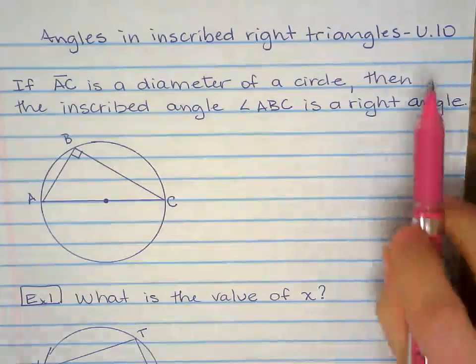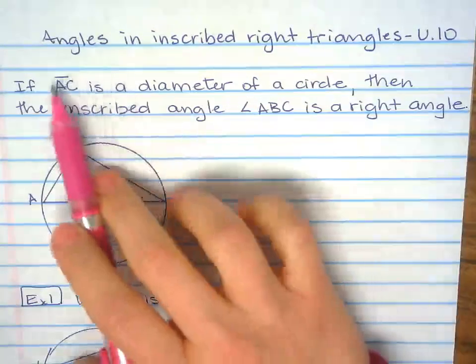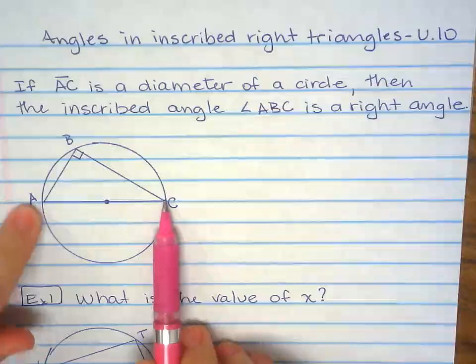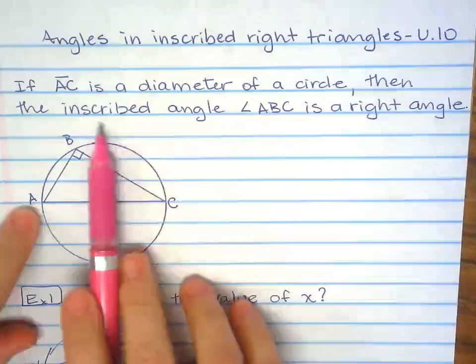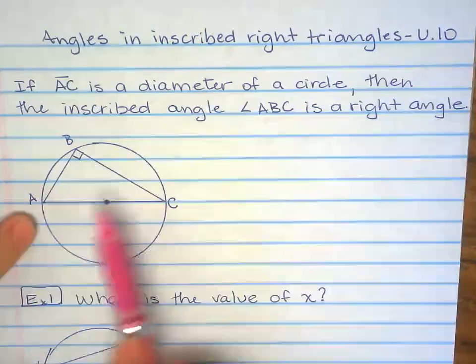So we're doing inscribed right triangles. These notes are to help you with IXL U10. So by definition we have if AC, if line segment AC is the diameter of a circle, then the inscribed angle ABC is a right angle.